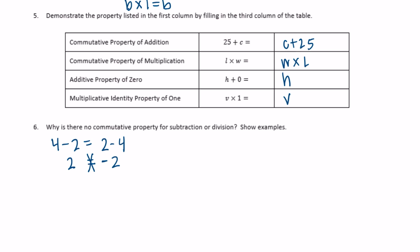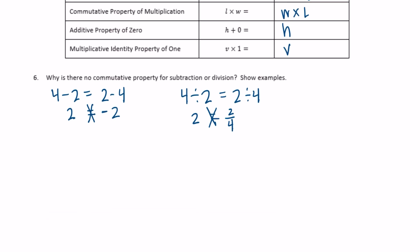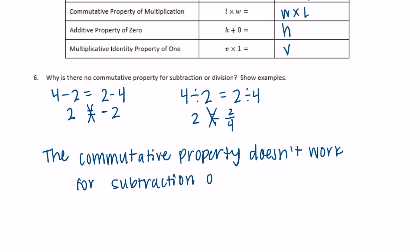Let's do a division problem. If we have four divided by two, that's two. Is that equal to two divided by four? Well, two divided by four would be two fourths, so those again are not equal. It just doesn't work for subtraction, so we could say the commutative property doesn't work for subtraction or division.